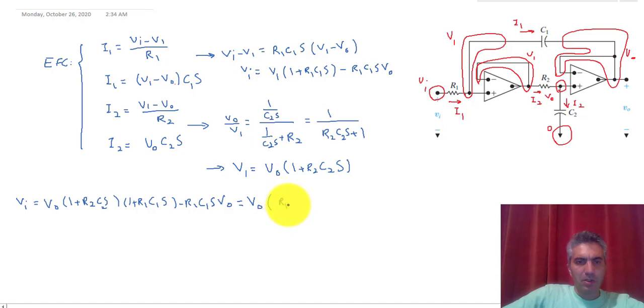R1R2C1C2 s to the power of 2 plus R2C2s plus 1. So now from this I can calculate H(s), the transfer function, which is Vout over VI, and that's equal to 1 over R1R2C1C2 s to the power of 2 plus R2C2s plus 1.